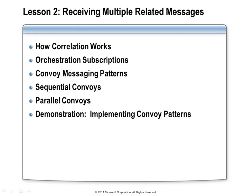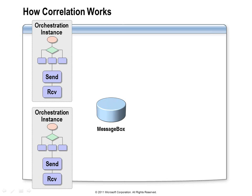There is one more thing to think about with regard to orchestration port bindings: when we need to implement an orchestration that will be receiving multiple related messages, especially if we don't know how many messages the orchestration will be receiving, or if we don't know the order in which they'll arrive, we need extra help from the orchestration runtime. We need to know how to configure the receive shapes in our orchestrations to handle these scenarios. Let's start with a review of what correlation is and how it works.